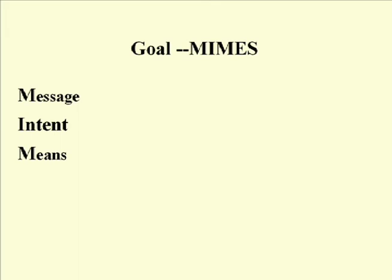These first three ideas — message, intent, and means — are very difficult to do separately from understanding the other things you want to get from the framework. Many times, as you gather more information about your message, you change your message as your intent changes, and they work together as you look at what means you have. You can't make a video presentation if you don't have a video camera, even though you know that would be the most effective way to get your message across in order to convince someone. So as these work together and you think about your target, you can move forward.